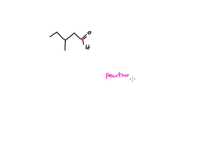Drop the E, add AL. And then, this is carbon one and this is carbon two and that's carbon three. So at carbon number three, I have a methyl group. Three-methyl pentanal.